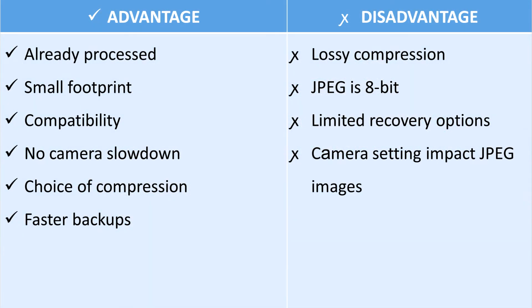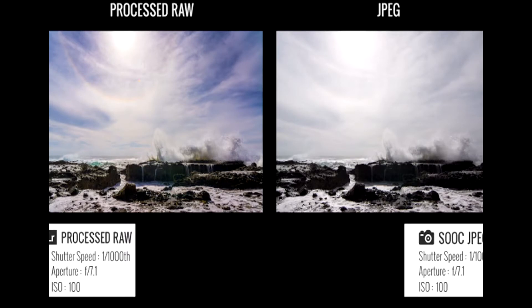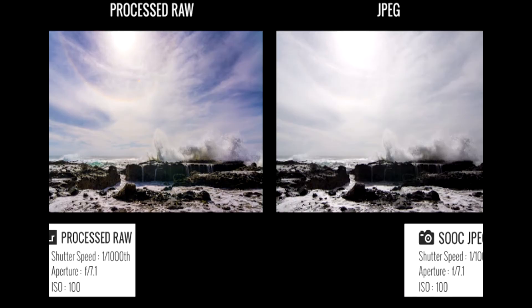The advantage of JPEG images is that they use less storage space. However, the disadvantage is that the editing range is more limited than RAW. If you edit a little bit too much, the JPEG image is easily damaged and the technical quality of the image is greatly reduced.